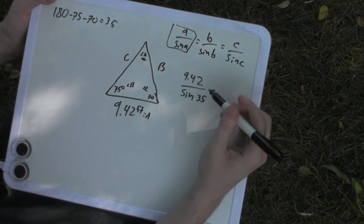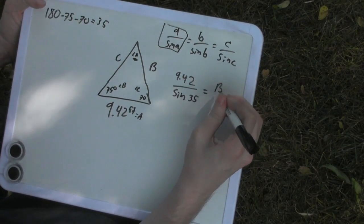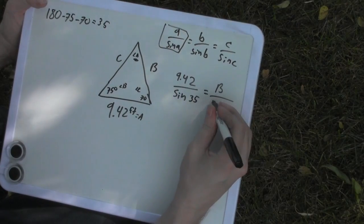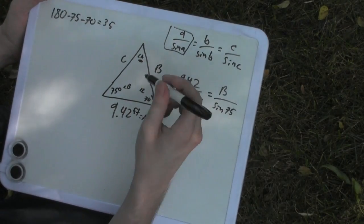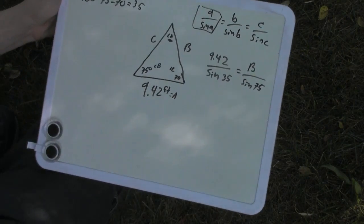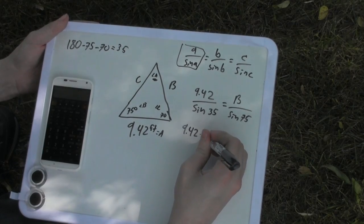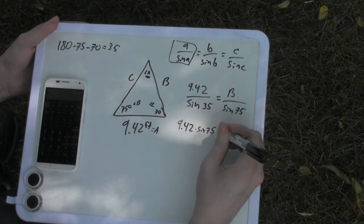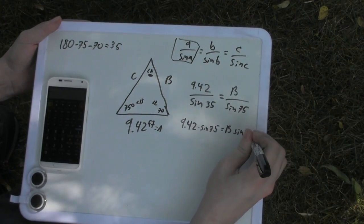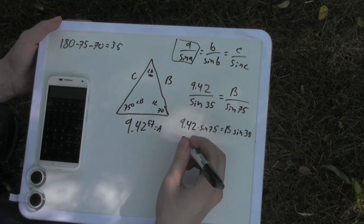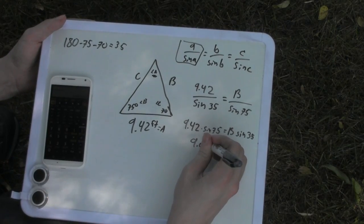And we can set that equal to, why not, let's just say B. So we don't have B. What we do have is the sine of B. We have sine 75. So then if I take out my handy dandy calculator, we have 9.42 times sine 75 equals B times sine 35. So we can do the multiplying here: 9.09.